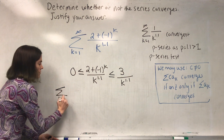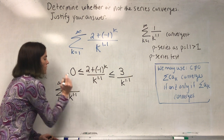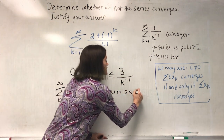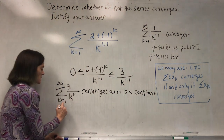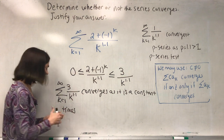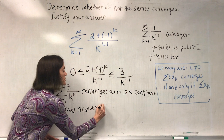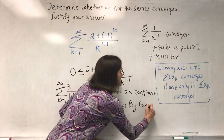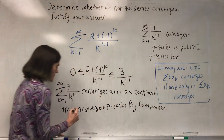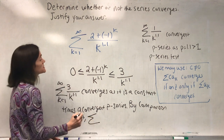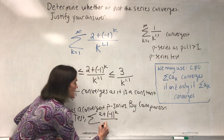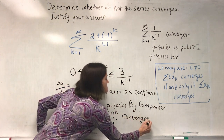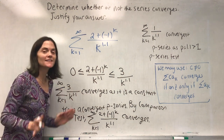The series three over k to the 1.1 converges, as it is a constant times a convergent p-series. By the comparison test, since we are smaller than something that converges, the sum from one to infinity of two plus minus one to the k over k to the 1.1 converges.